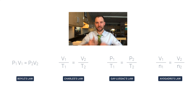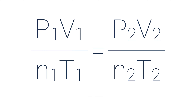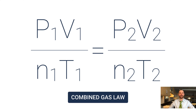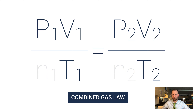The combined gas law takes all four understandings and combines them: p1v1 / n1t1 = p2v2 / n2t2. Very often in gas chemistry we have a sealed sample of gas, meaning n1 and n2 do not change. So very often you'll see the combined gas law simplified as p1v1 / t1 = p2v2 / t2.